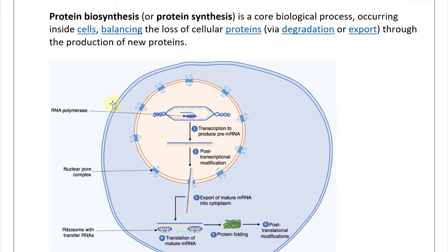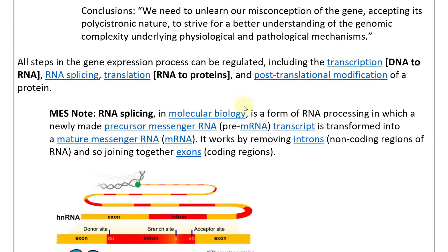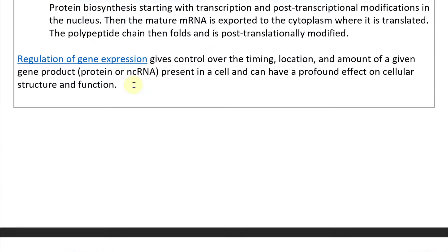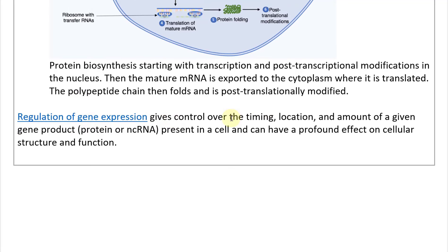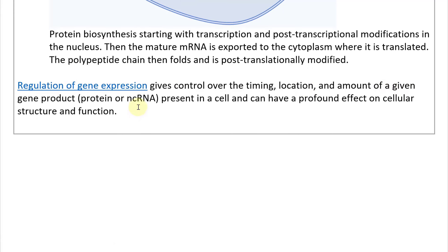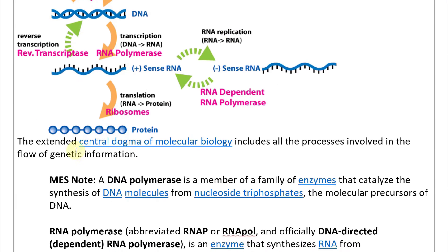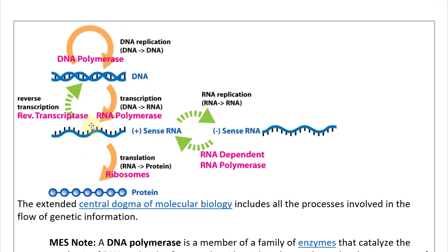Now let's look at the extended central dogma of molecular biology, which includes all the processes involved in the flow of genetic information. DNA polymerase enables DNA replication — going from DNA to DNA. Transcription uses RNA polymerase to go from DNA to RNA. Reverse transcription uses reverse transcriptase to go from RNA back to DNA. The plus sense RNA can go to RNA replication using RNA-dependent RNA polymerase, producing negative sense RNA, and positive sense RNA can be translated to protein via ribosomes.